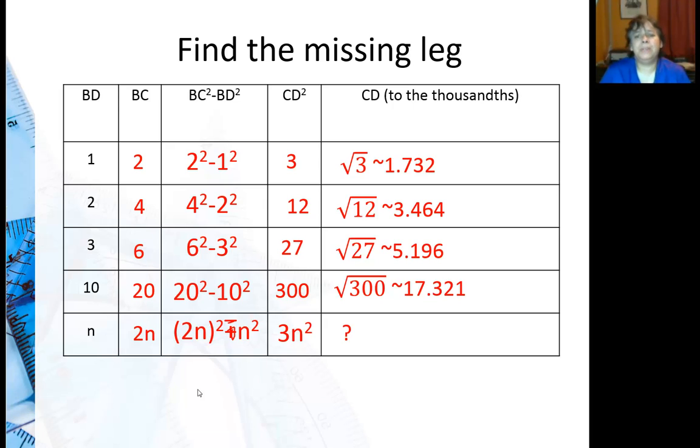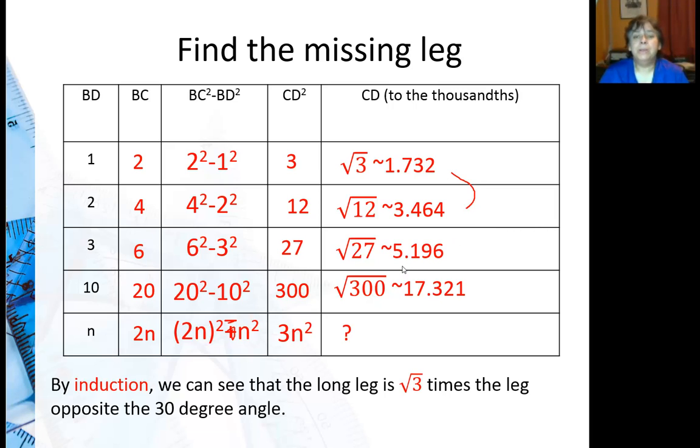But what is my generalization? Well you might notice that here to here, this is just double the other, 1.732. And if you look at this one right here, that's 10 times 1.732. So this number that is being multiplied every time is the square root of 3. So by induction, that means looking at the pattern.